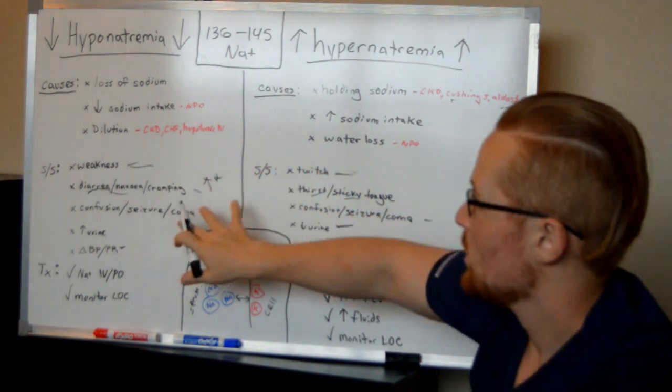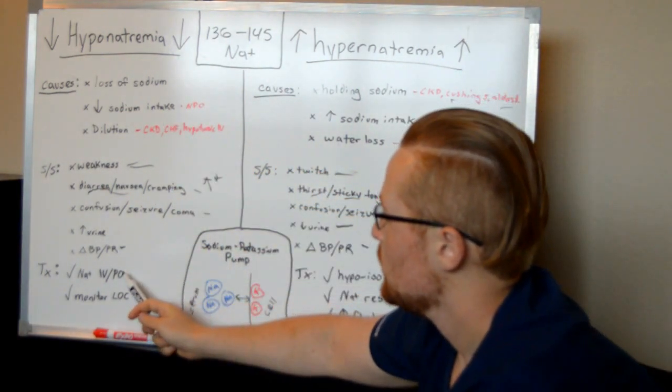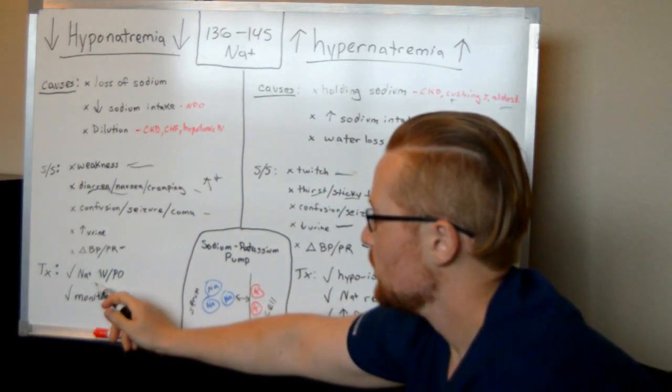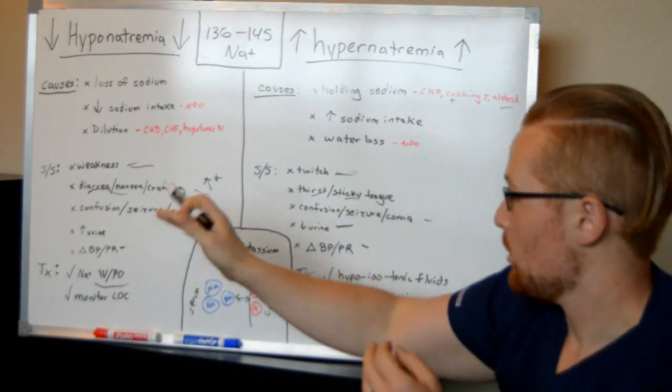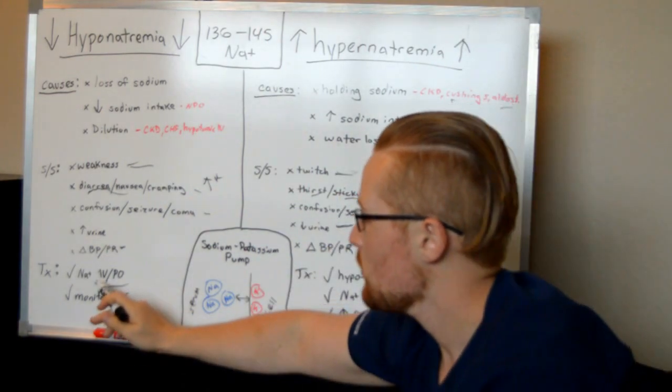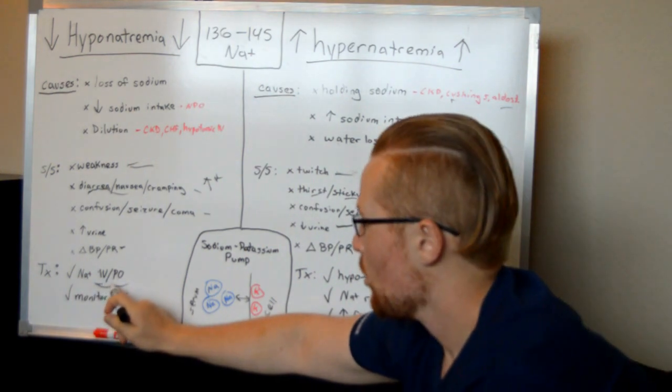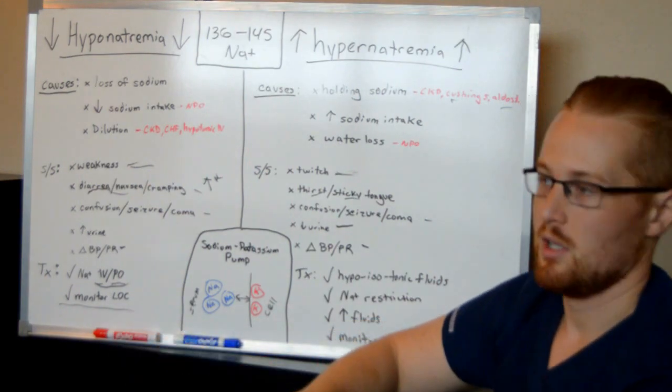Now what it comes down to is treating the cause. So with hyponatremia, what you want to do is you want to give them salts. They don't have enough salt, you're going to give them salt. And typically, you do it nice and slow because you don't want to cause problems with the brain. And the brain, in both these cases, you're going to want to go nice and slow, bring it back slowly. So you want to give them either IV salt, sodium, and IV fluids, or you can give them salt tablets. In either case, monitor their level of consciousness and their mentation.